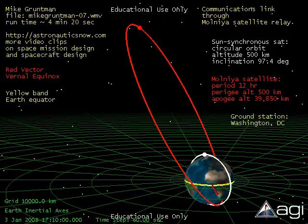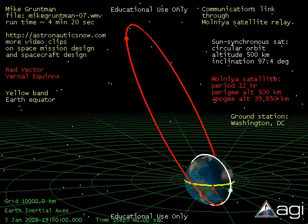The orbit apogee is over the northern hemisphere, and it will stay there because of the zero rotation of the line of Opsides. When the satellite slowly moves near apogee, it would provide excellent communications coverage for the northern polar areas of the globe.